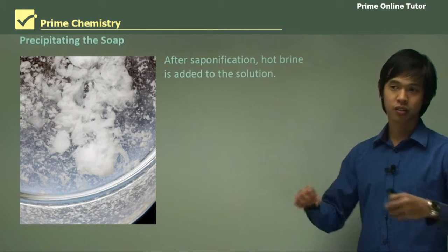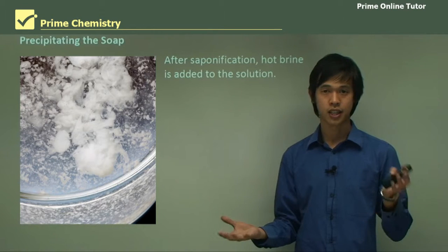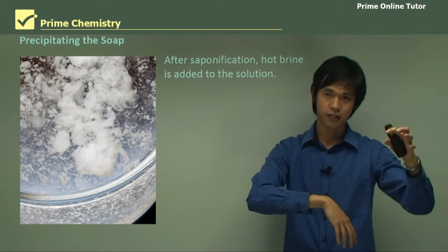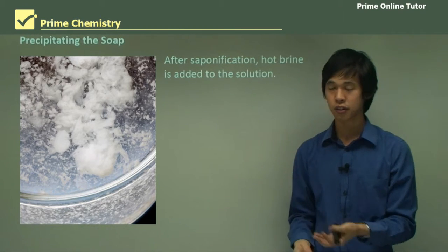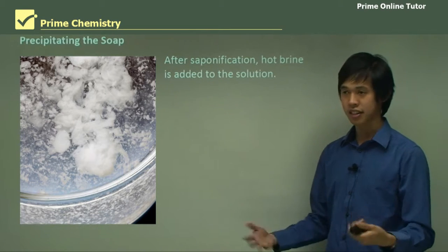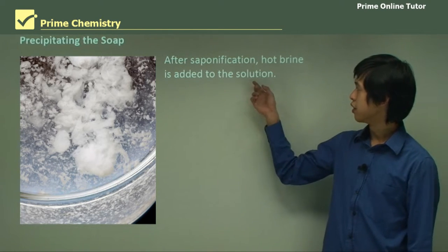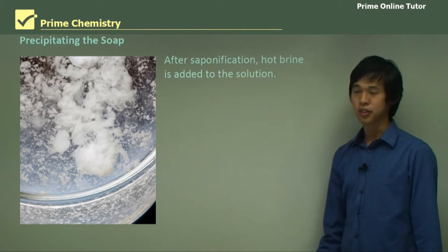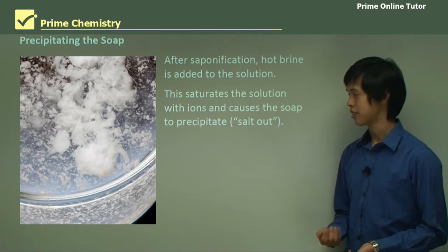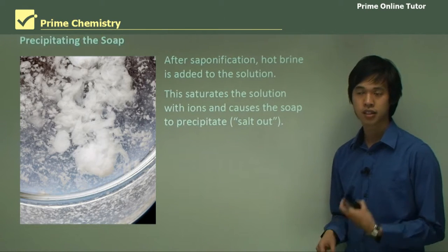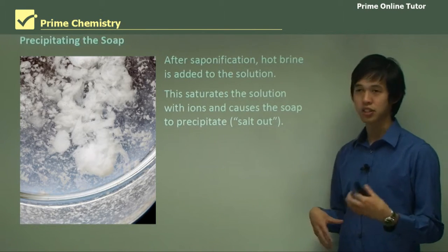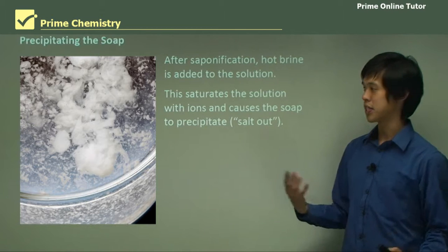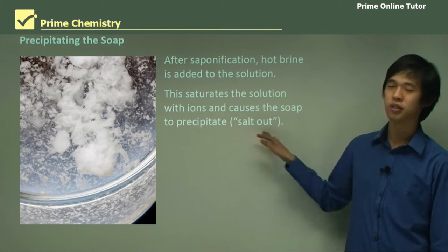Once we've formed the soap through the transesterification process, where the sodium bonds with the fatty acid and the OH bonds to the glycerol group, we want to get the soap out. So we add hot brine — very salty water — to the solution. This saturates the solution with ions and causes the soap to precipitate, because the soap is less soluble when the solution is concentrated. This is called salting out the soap.